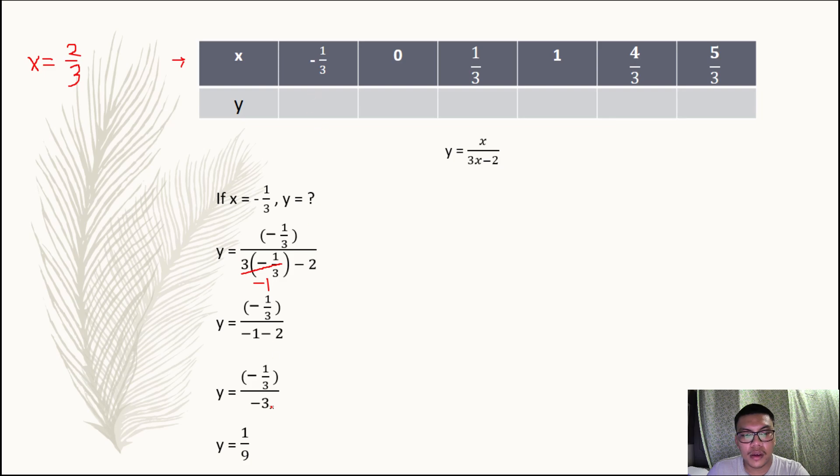We obtain, so we have a positive one over nine for our y there. Then if x equals one third, we substitute again, one third all over three times one third minus two, so this becomes one minus two, we have negative one third.